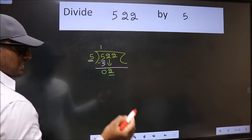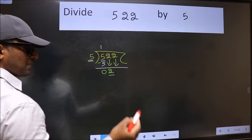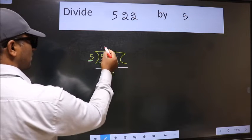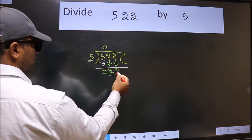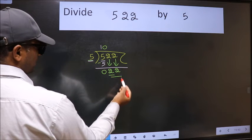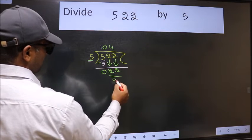So, we should bring down the second number. And the rule to bring down second number is we should put 0 here. Then only we can bring this number down. Now, 22. A number close to 22 in 5 table is 5 fours 20.